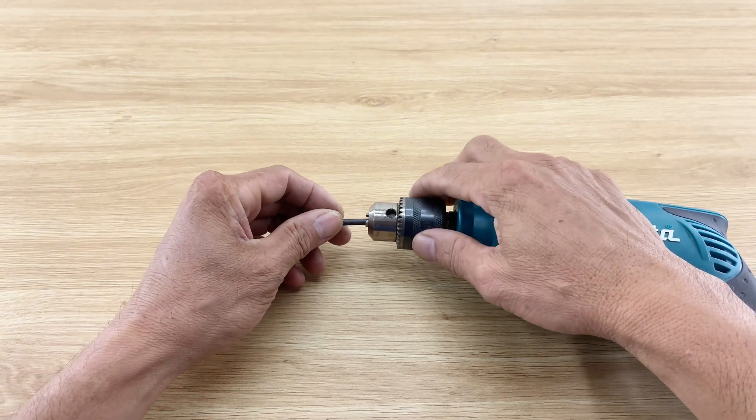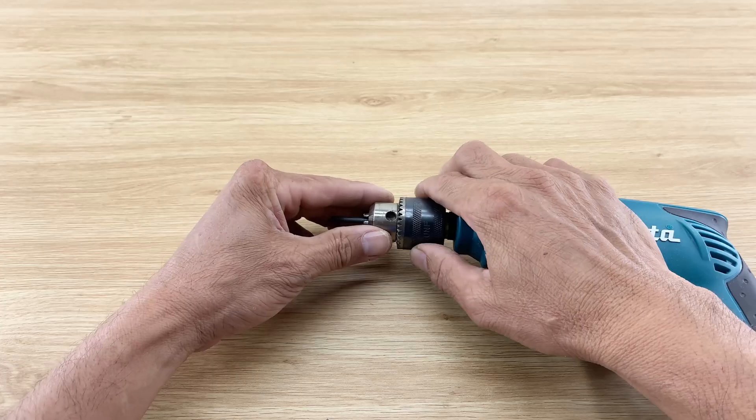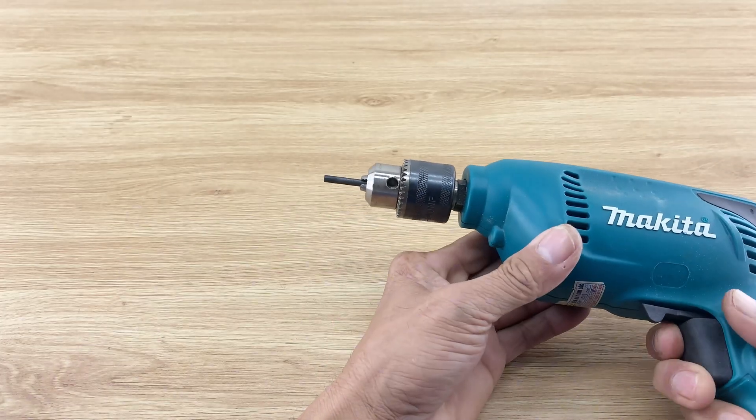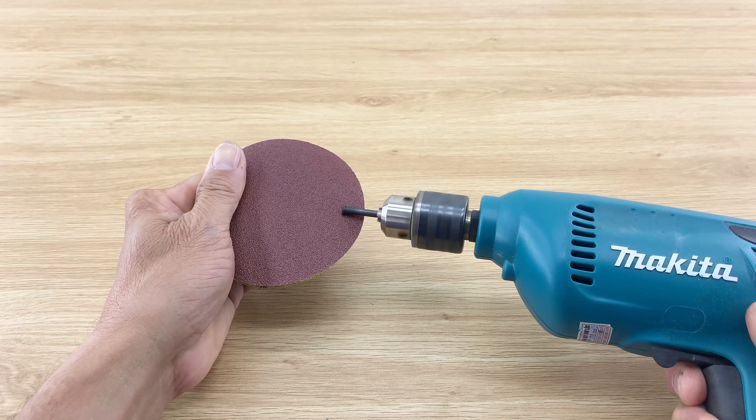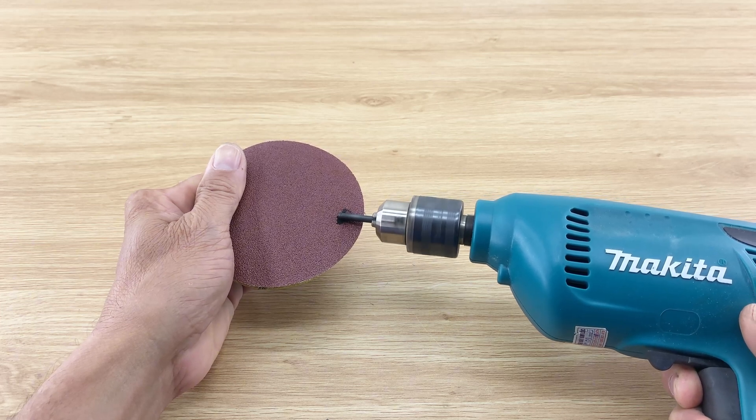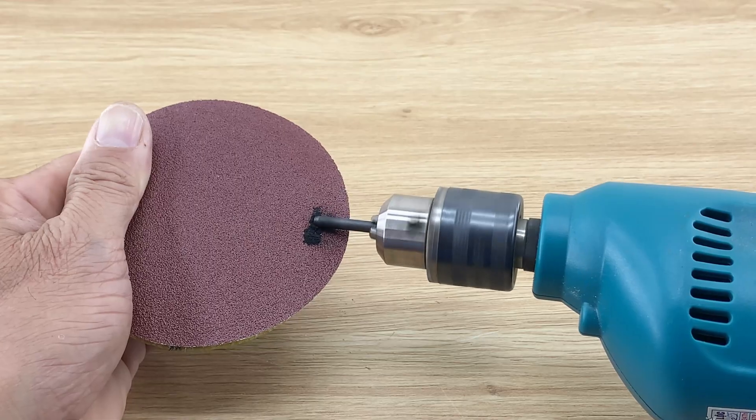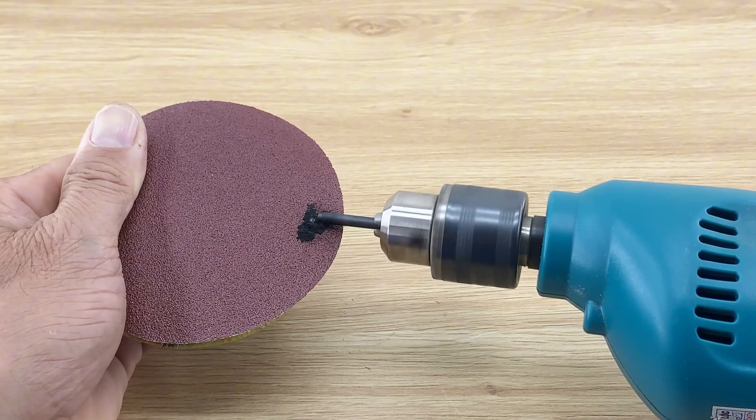To make our carbon rod tip precise and effective, I'm securing it into a drill chuck. Then, using sandpaper pressed against the spinning tip, I'm refining it. This sharp point will help concentrate the heat, making our soldering more precise.